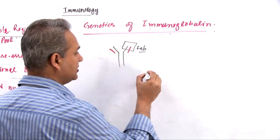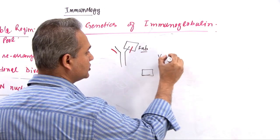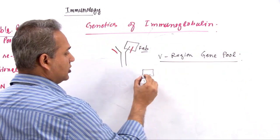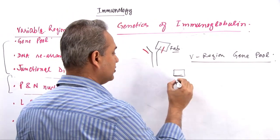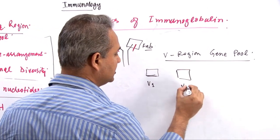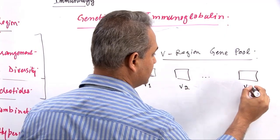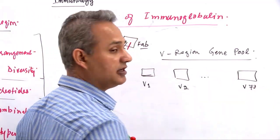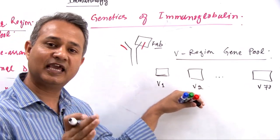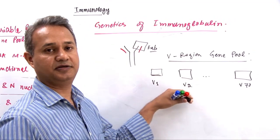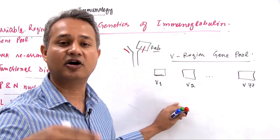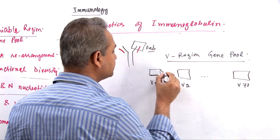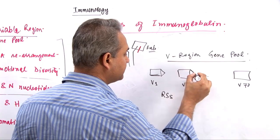I am going to draw the genes here. We have the V region gene pool, which contains about 68 to 70 genes — V1, V2, and so on up to V70. Every gene in the pool can be used to make the same part of the antigen binding site, but only one of them will be selected; you cannot take V1 and V2 together. Now, attached to these genes are RSS — Recombination Signal Sequences.